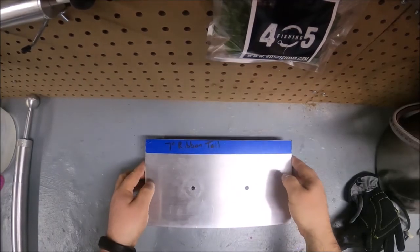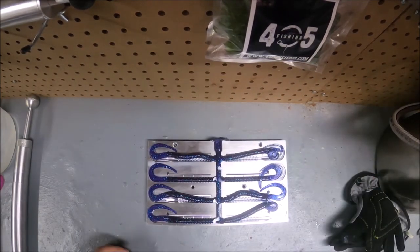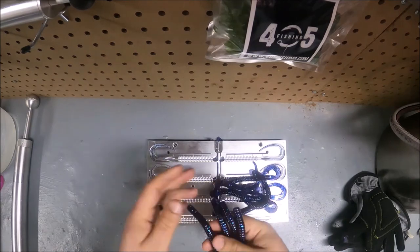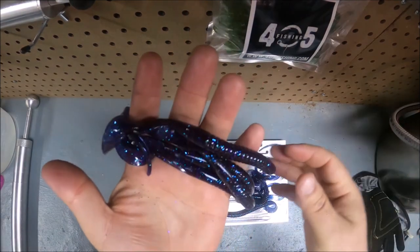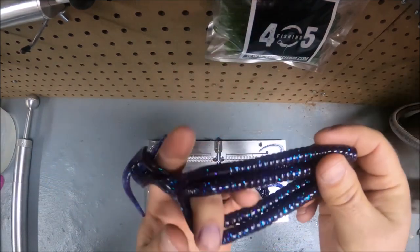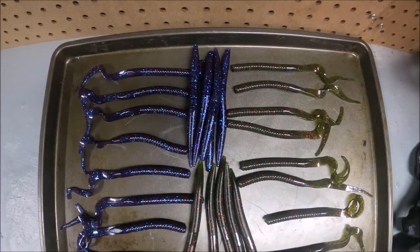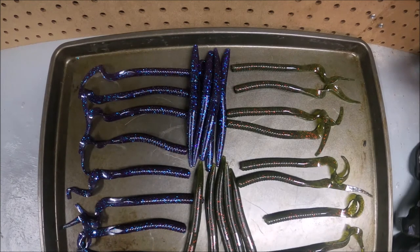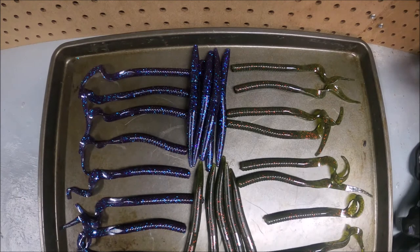Alright. So, I went ahead and shot the Ribbentails off camera. Alright. So, that is 7-inch Junebug Candy Ribbentails with garlic salt added. Alright. So, there's a look at everything. We have five stick baits in the watermelon red, five in the Junebug Candy, and then eight seven-inch curly tails in the watermelon red, and eight seven-inch curly tails in the Junebug Candy.